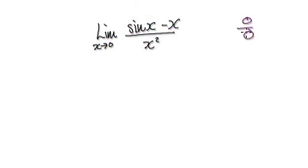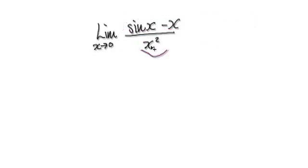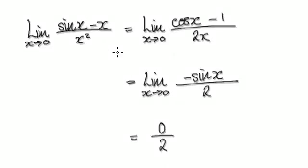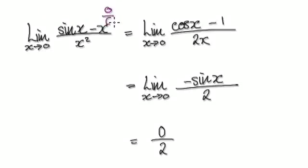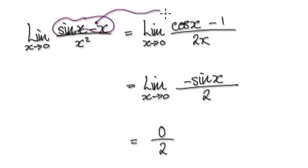Now that we know it's 0 over 0, we can apply L'Hôpital's rule. Remember, we're going to differentiate the numerator, and then we're going to differentiate the denominator. So to evaluate this limit as x tends to 0, we know it's 0 over 0. Differentiate the numerator — that gives you this.